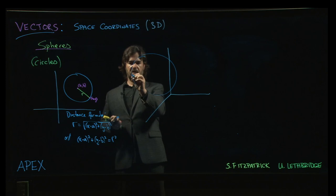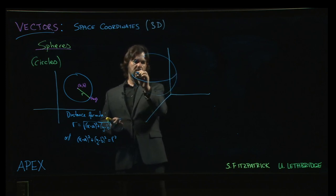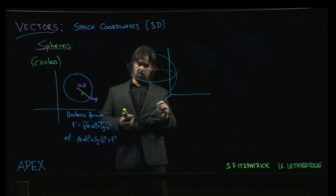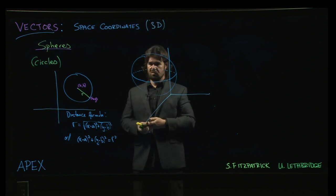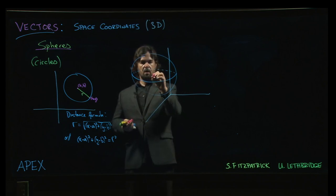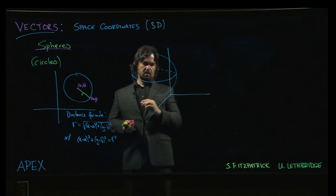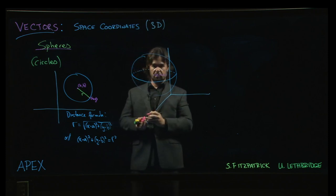So to make it look spherical, sort of draw yourself an equator, a dashed line going around behind. Looks spherish to me. It's not perfect, but what can you do? Okay, so now that sphere has a center, and it has coordinates, let's say, a, b, c, right? Because we're in three dimensions now.